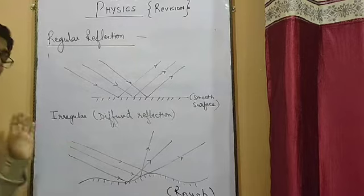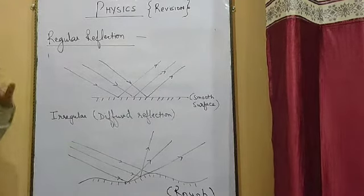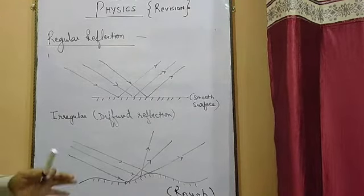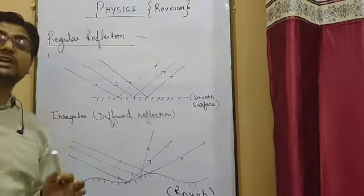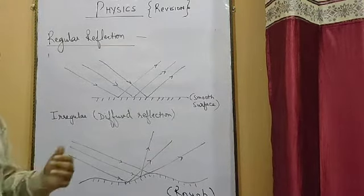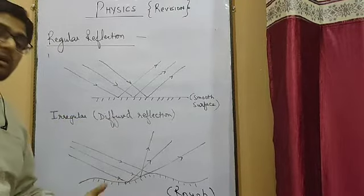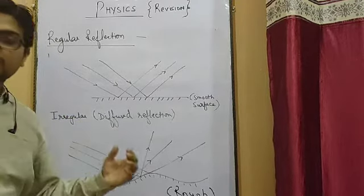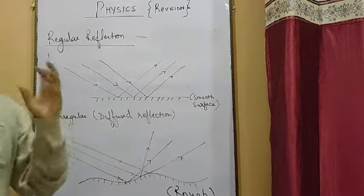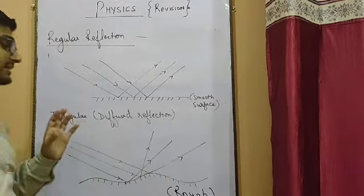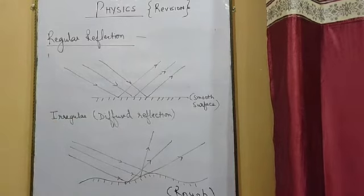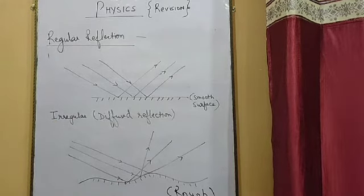Diffused reflection is also very important. Because of this diffused reflection it is easier for us to see things around us. Whatever things we see around are basically irregular, that is rough surfaces, and they scatter light in different directions. So from different directions we can see the objects easily. That is the importance of irregular or diffused reflection.